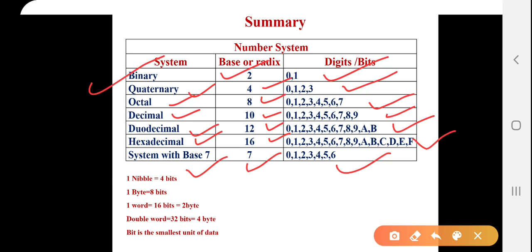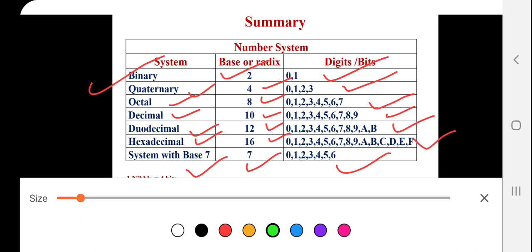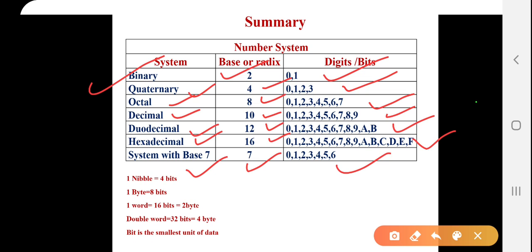Some important points which we also remember, that 1 nibble is equal to 4 bits, 1 byte is equal to 8 bits, 1 word is equal to 16 bits or 2 bytes, double word is equal to 32 bits or 4 bytes, and bit is the smallest unit of data.